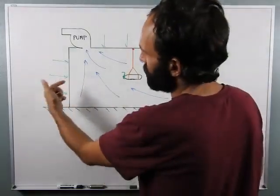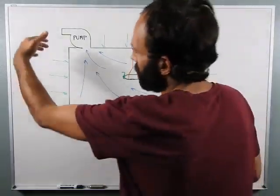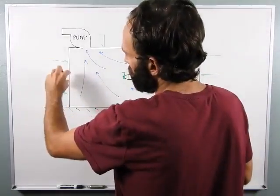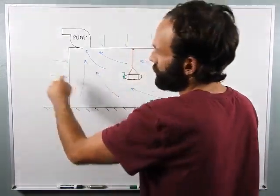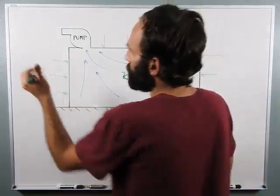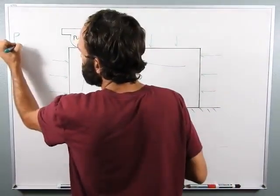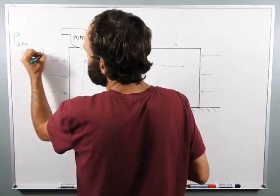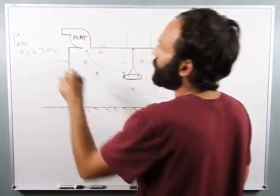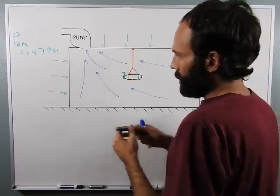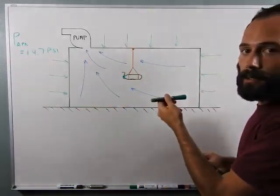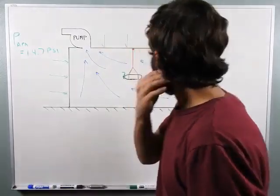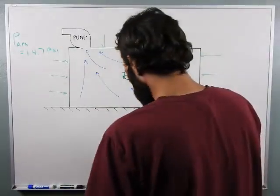So if you were to puncture the side of the tank, the pressure differential would make the air want to rush into the vacuum chamber. Since there's zero pressure in here and out here the pressure is P atm equals 14.7 psi, all the air is going to want to rush into the vacuum chamber.